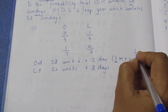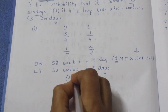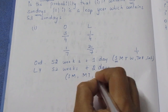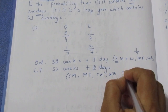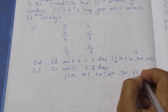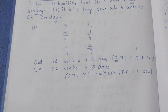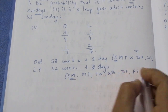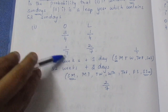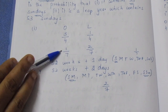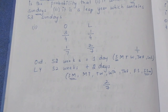An ordinary year has 365 days — that is 52 weeks plus 1 extra day. So P(Sunday) = 1/7. A leap year has 366 days — that is 52 weeks plus 2 extra days: Sunday-Monday, Monday-Tuesday, Tuesday-Wednesday, Wednesday-Thursday, Thursday-Friday, Friday-Saturday, Saturday-Sunday. If you look at Sunday, it appears in 2 combinations, so P(Sunday in leap year) = 2/7.